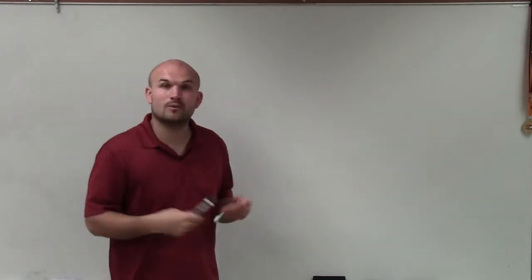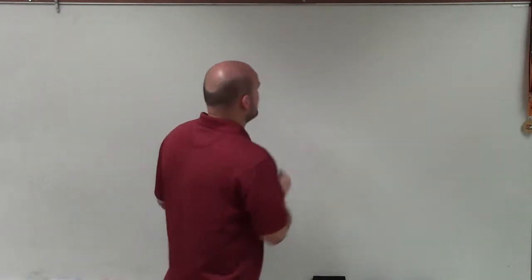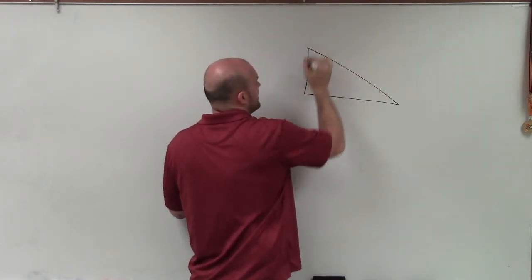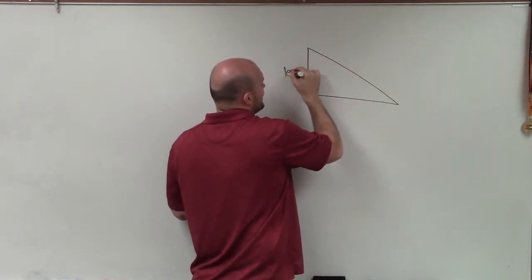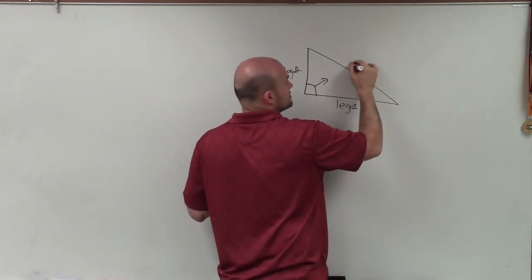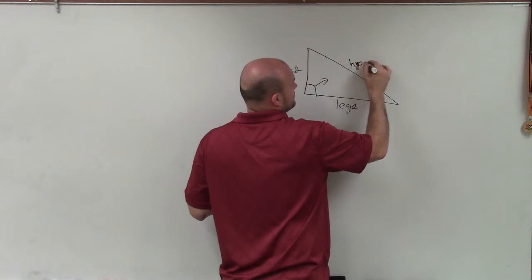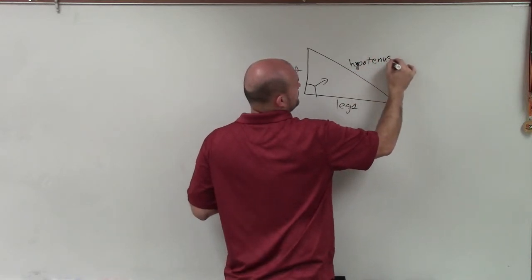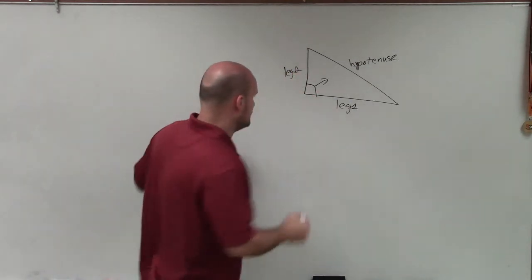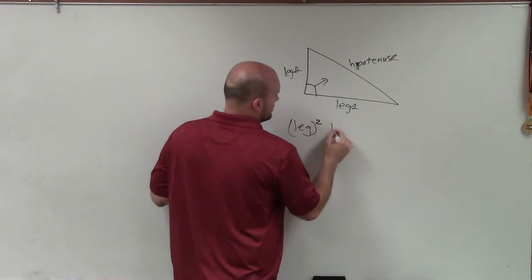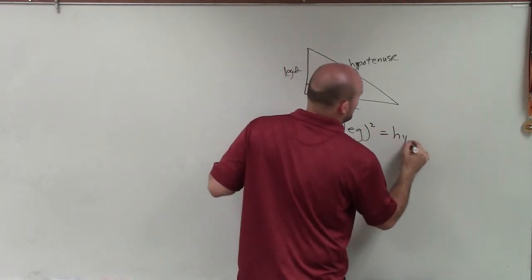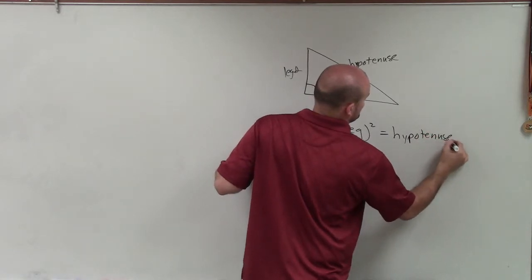Welcome. So what I want to do is tell you about what exactly is the Pythagorean Theorem. So if we have a right triangle, the Pythagorean Theorem states that when we have a right triangle, we have two legs. And the side that's across from the right angle is called the hypotenuse. When you have a right triangle, then the leg squared plus the leg squared equals the hypotenuse squared.